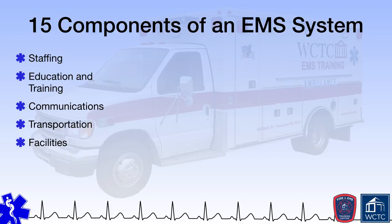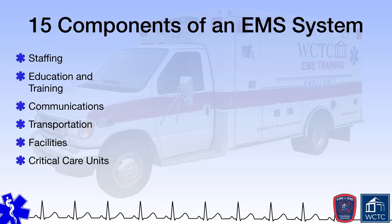The fifth component states that EMS systems must include an adequate number of easily accessible EMS facilities that are collectively capable of providing services on a continuous basis, have appropriate non-duplicative and categorized capabilities, meet appropriate standards relating to capacity, location, personnel, and equipment, and are coordinated with other healthcare facilities. Sixth, EMS systems must provide access, including appropriate transportation, to specialized critical medical care units in the system service area or, if there are no such units or an inadequate number, provide access to such units in neighboring areas if feasible in terms of time and distance.